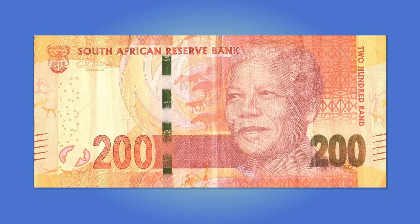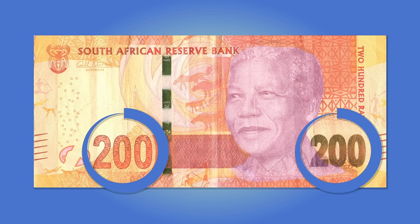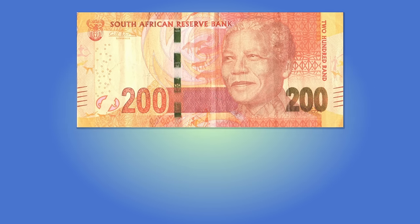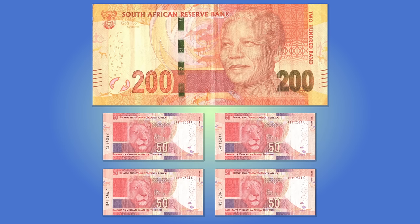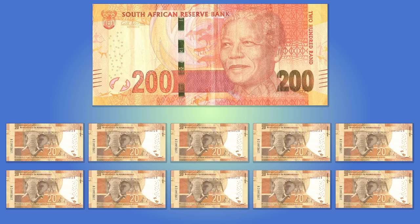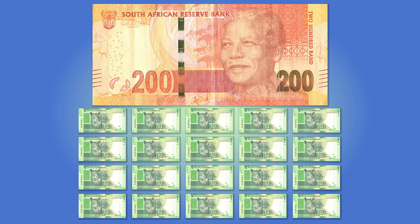On the back it has a picture of Nelson Mandela. You can see the number 200 on either side of the picture and the words 200 Rand on the top right of the note. A 200 Rand note is equal to two 100 Rand notes, or four 50 Rand notes, or ten 20 Rand notes, or even twenty 10 Rand notes.